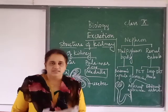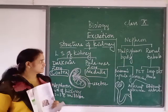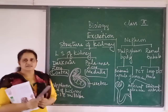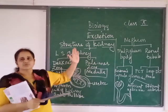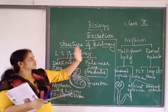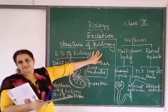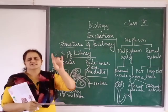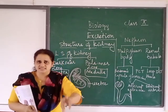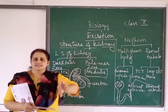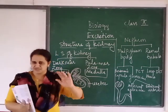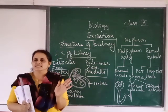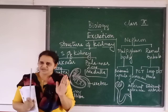Welcome students. Now we will continue with the chapter of excretion. Yesterday in class we learned about the external structure of kidney — externally how a kidney looks, what is the color (reddish brown), what is the shape, what is the size, and the location of the kidney. All these points together make up the external structure of kidney.